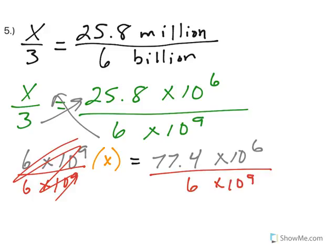When I do that, I end up with 12.9 times 10 to the negative 3. Remember, 6 minus 9 is negative 3.